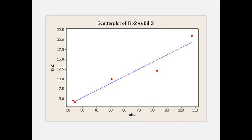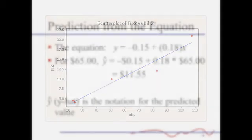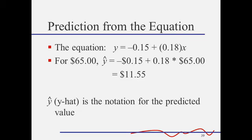I used my calculator to compute the regression line. I'm not going to go over this now because there's an excellent video that explains all this and we'll also go over the calculator functions in class. So we'll skip right to the result: an equation of y equals negative 0.15 plus 0.18 times x.